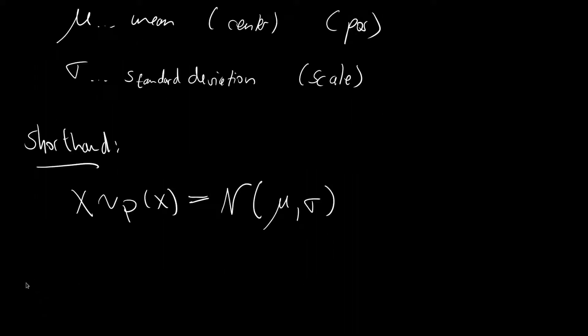And in our example with the grades we might have something like x is distributed according to normal with a mu at 2.5 and a sigma maybe at 1.0.